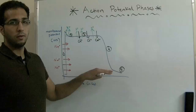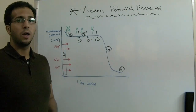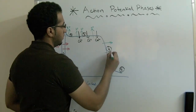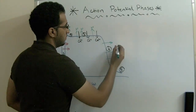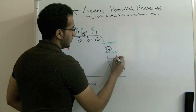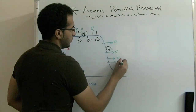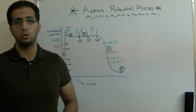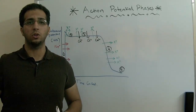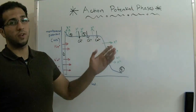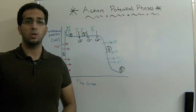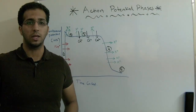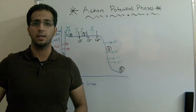For the fourth phase, repolarization, it is caused by potassium exiting the cell. That covers the details of how ions enter and exit the cell during the action potential. Thank you very much and hope to see you soon in the next video.